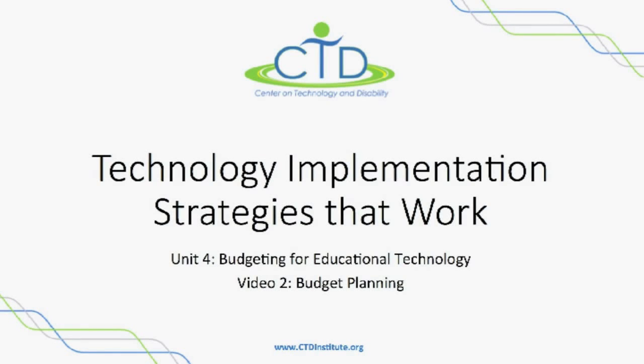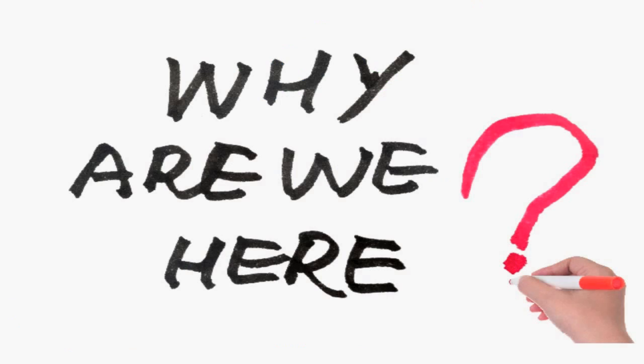Welcome to the Center on Technology and Disabilities series on technology implementation strategies that work. This video is part of Unit 4, Budgeting for Educational Technology. The goals of this unit are to outline the processes for defining current technologies in the school building, identifying new technologies that are needed, and drafting a multiyear budget.